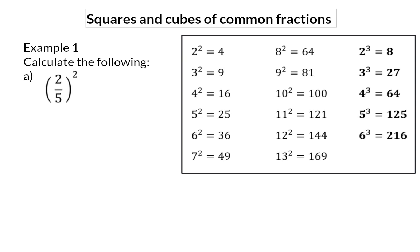Example 1. Calculate the following. Here we have the fraction 2 over 5 that should be squared. When a number is squared, it means you multiply that value by itself. And now we know that to multiply fractions, we multiply the numerator and then we multiply the denominator.